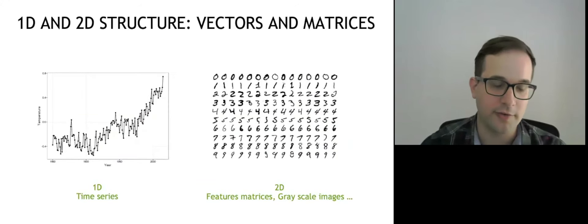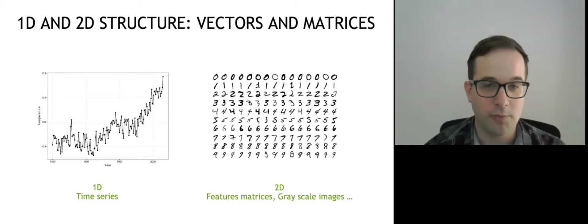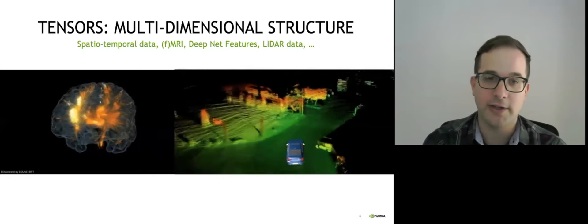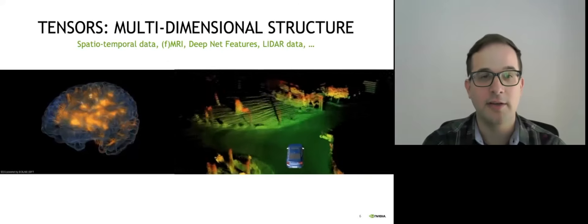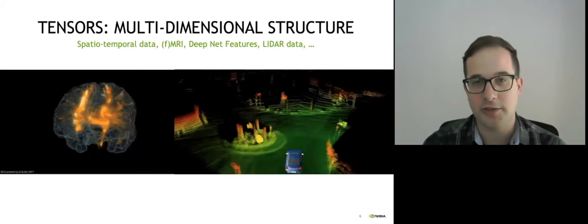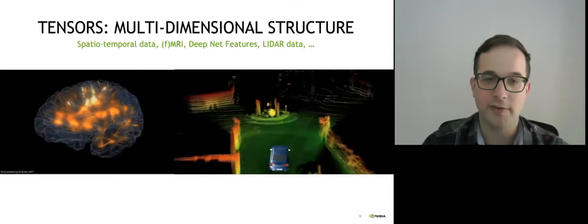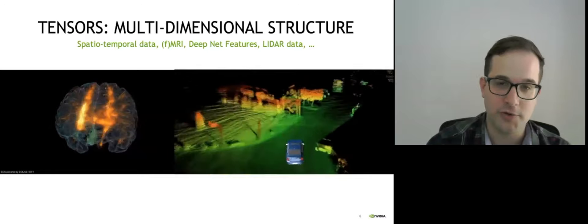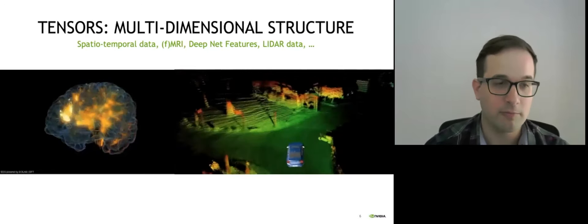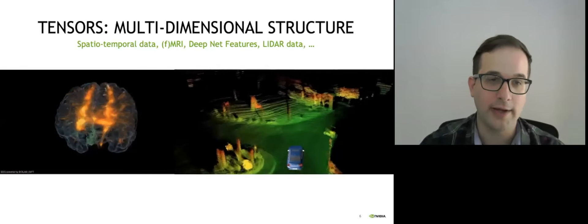You would use first-order tensors or vectors to represent things like time series. Feature matrices in regular machine learning are typically represented as second-order tensors, where each row represents one sample. In general, most of the data we manipulate in modern deep learning is multidimensional — think spatial-temporal data, MRI, functional MRI, deep neural network features, LIDAR data, etc. This kind of multidimensional data is not only omnipresent in modern ML, it also has a lot of spatial, temporal, and topological structure. For example, if you're learning from video, leveraging temporal correlations is crucial for good learning. Similarly, if you're learning from MRI data, structure is crucial. Tensor methods give us a way to leverage that structure.